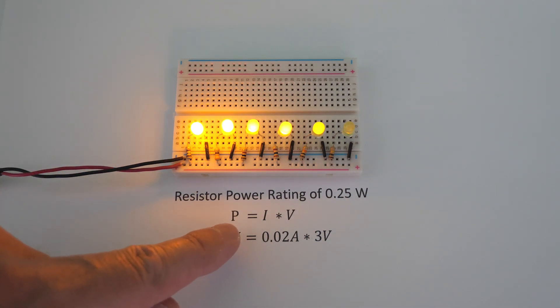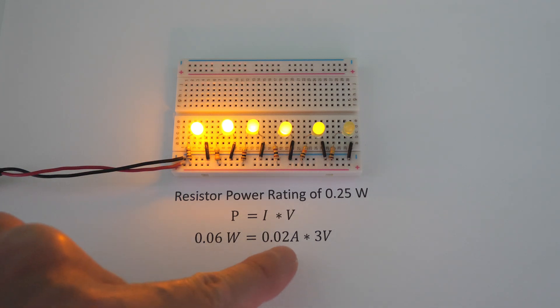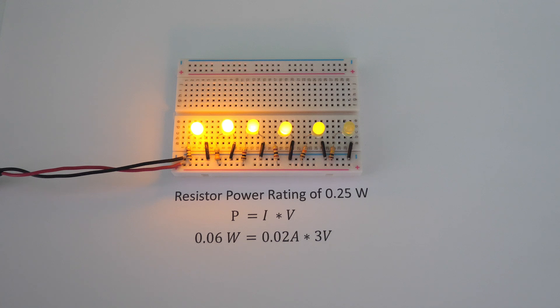We can see right here the power equation, where power equals current times voltage. This resistor right here, being 150 ohm, has about 20 milliamps of current going through it. So if we take 20 milliamps of current times the 3 volts, which is the voltage drop across this resistor, we get a power dissipation of 0.06 watts, which is well below the 0.25 watts that are allowable. And all of these other resistors are even going to have less power dissipated with them, so they are all safe as well.